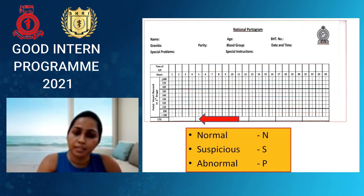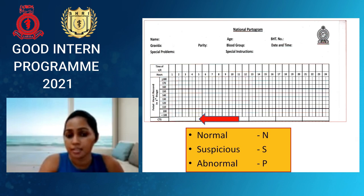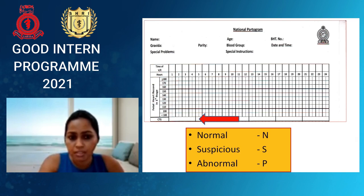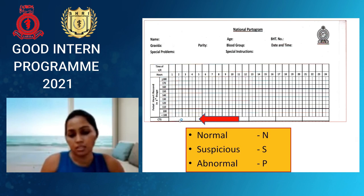CTG is categorised into three types: normal, suspicious, or abnormal. How to categorise CTGs is a separate lesson we will cover later. When you perform a CTG, you must assess it in all aspects, categorise it, and record the category in the CTG column on the partogram.